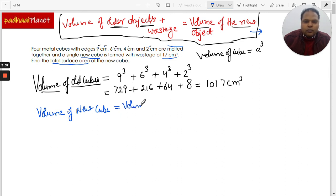volume of old cube, or cubes in this case, because there are four cubes, minus the wastage volume. So we can simply write 1017 minus 17.